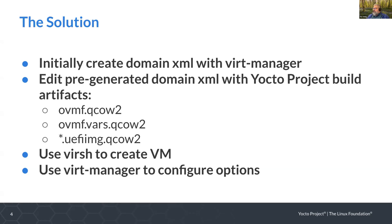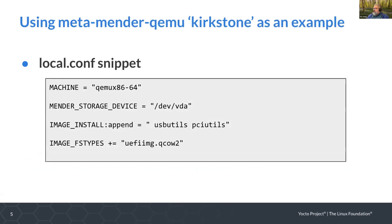QCOW2 is a format commonly used in cloud images for wrapping raw images. After that, I use virsh to actually create the VM after the initial creation, and then use Virt Manager to configure options. In this case I'm using MetaMender QEMU as an example because that worked. I tried core image minimal and core image full desktop and full command line but they didn't quite work, so I just made sure I did something I knew worked.